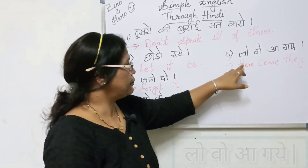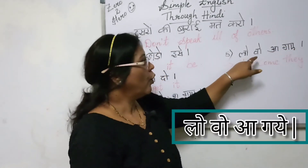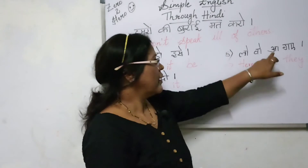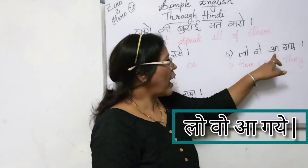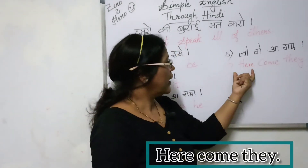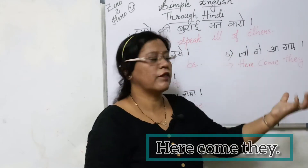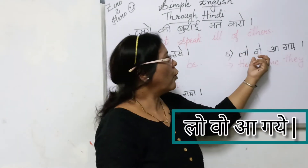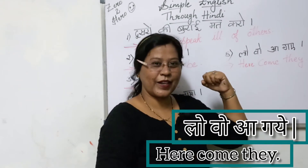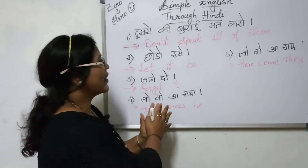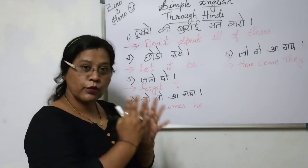Now the last one: 'Lo wo aa gaye.' This is the plural form — referring to more than one person. So 'Lo wo aa gaye' in English is 'Here comes they' or 'Here they come.' So my dear friends, please note down these sentences and start using them in your day-to-day life, because language only comes when you practice it in reality.